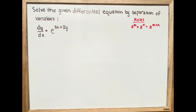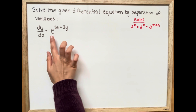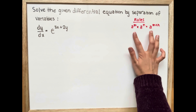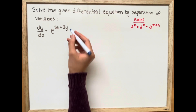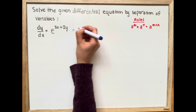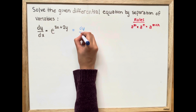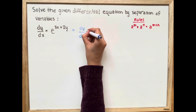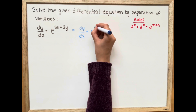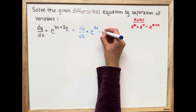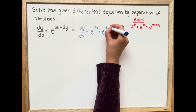Solve the given differential equation by separation of variables. dy over dx is equal to e to the power of 3x plus 2y. First, we're going to separate our right side by using the exponent rule. This is going to equal dy over dx equals e to the power of 3x multiplied by e to the power of 2y.